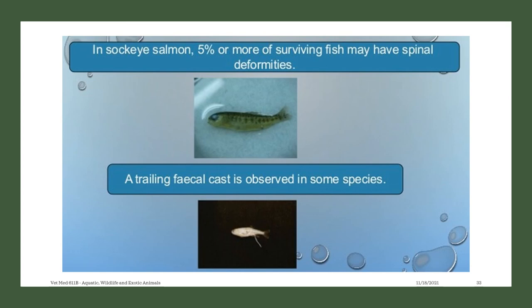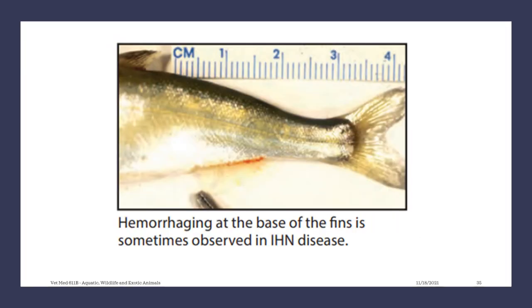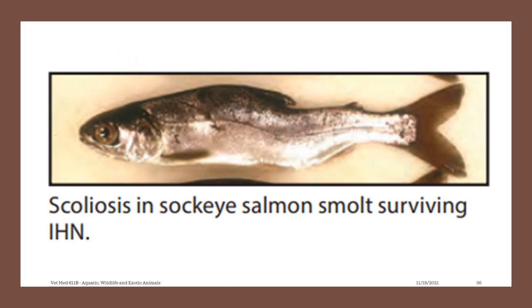In sockeye salmon, 5% or more of surviving fish may have spinal deformities, and there is also a trailing fecal cast observed in some individuals. The cross signs seen in sockeye salmon fry infected with IHN include an exaggerated cephalic bump which commonly occurs with IHN disease. Hemorrhaging of the fins at the base is sometimes observed, and scoliosis is seen in sockeye salmon that survive IHN.